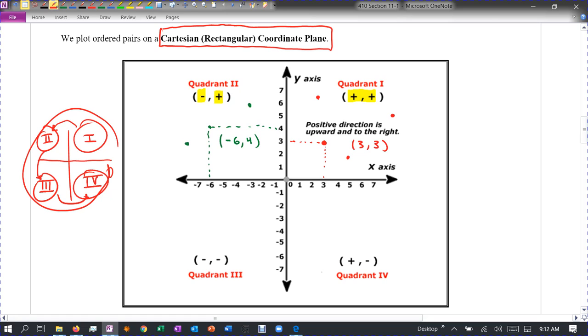And then if I pick any point, let's say down here in the third quadrant, that would be like negative five, negative three, that both the X and Y coordinates are negative.